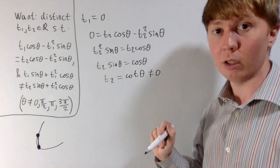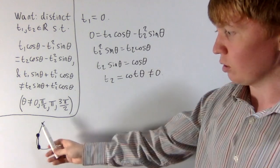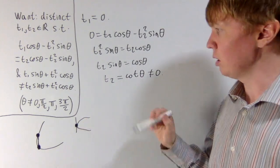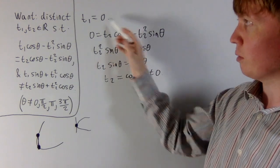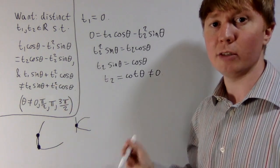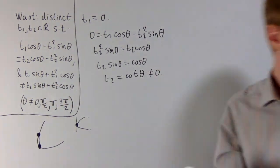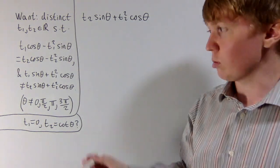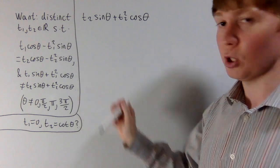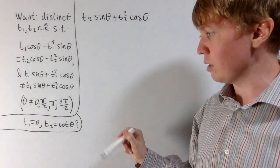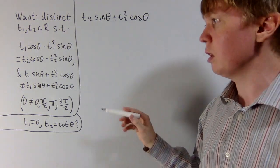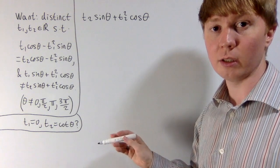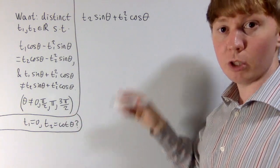We've found a different value t2 equals cot theta. The case t1 equals t2 equals zero would correspond to a vertical line tangent to the curve at zero, giving only one value. Now we need to check that for t2 equals cot theta, the y coordinate — the imaginary part — is genuinely different from zero, so we have one input with two distinct outputs.